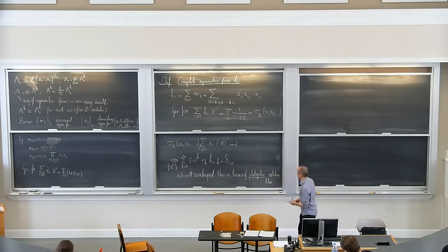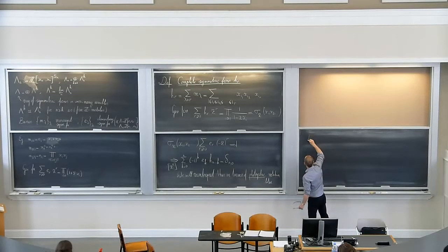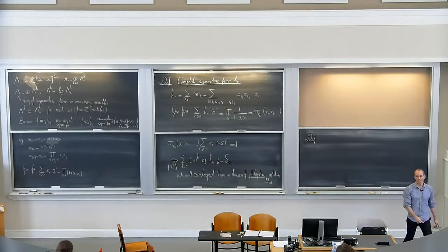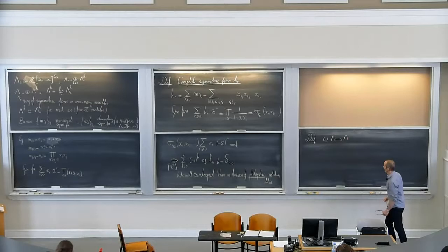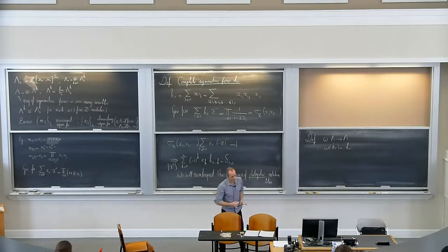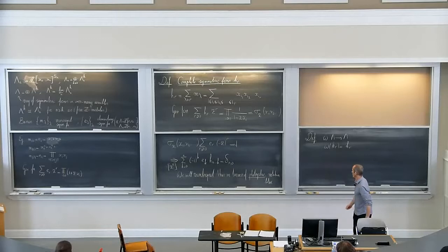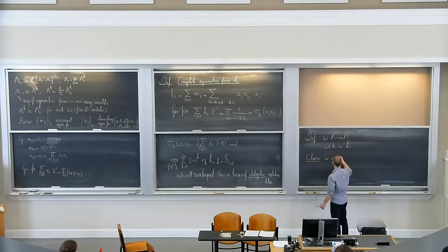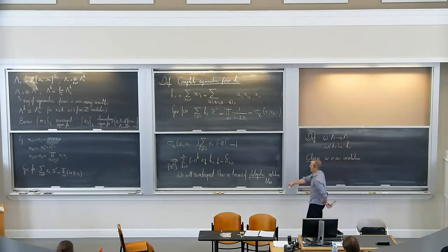Now I'll define an involution omega on the ring of symmetric functions lambda — a map from lambda to itself. It's defined by: omega(e_r) = h_r, i.e., it just replaces elementary symmetric functions by complete symmetric functions. It follows immediately that this is an involution.